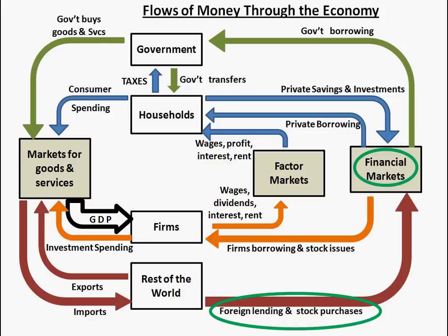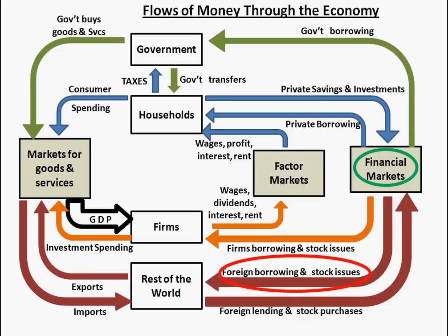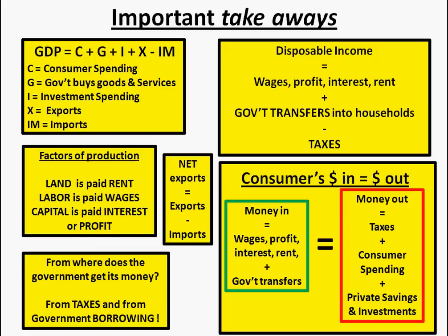That's the circular flow diagram. Key takeaways: GDP equals C plus G plus I plus X minus IM. Factors of production are paid rent, wages, interest, and profit. Net exports are exports minus imports. The government gets its money from taxes and borrowing. Disposable income is wages, profit, interest, and rent plus government transfers minus taxes paid out. And the consumer's money coming in always equals the money going out.